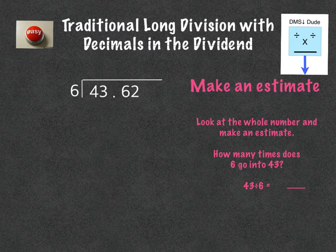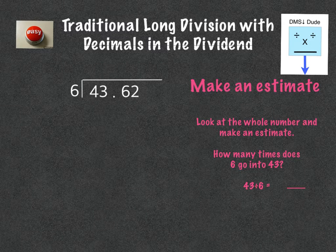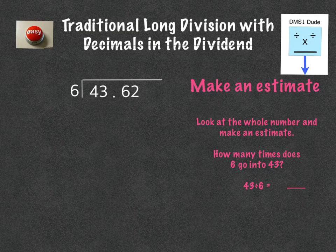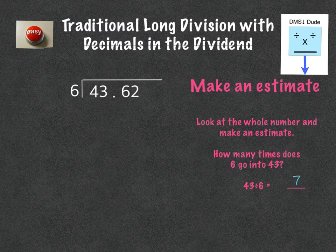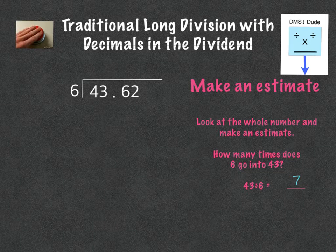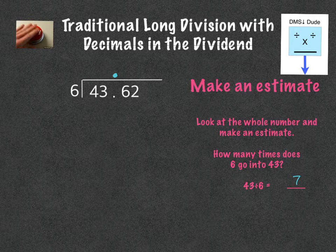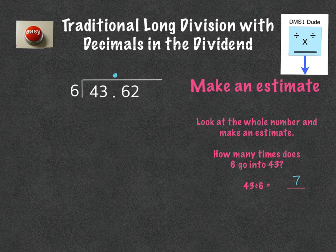So let's talk about this. We are going to hit our decimal elevator up, and we're also going to make our estimation. If we think about how many times six could go into 43 — so 43 divided by six — if we think back to our facts, six times seven is 42, so our estimate is going to be about seven times. So the first thing we need to do is hit that decimal elevator button and put our decimal elevator up here. Then we are ready to do our standard long division.